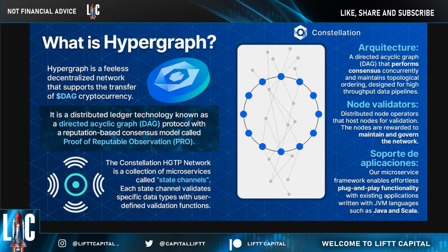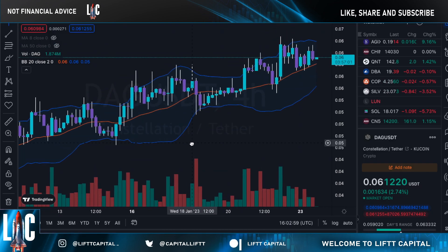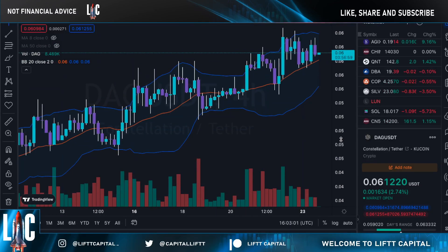Node validators are distributed node operators that host nodes for validation — that could be the U.S. Air Force, the CIA, or any government entity. These nodes are rewarded to maintain and govern the network. The Constellation network is also a collection of micro-services or state channels, each validating specific data types with user-defined validation functions.